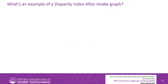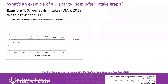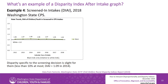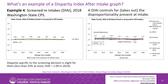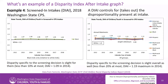Example 4: screened-in intakes, DI-AI, 2018 Washington state CPS — black kids only, relative to white kids. Disparity specific to the screening decision is slight for them, less than 10% at most; DI-AI equals 1.09 in 2014. A DI-AI controls for — that is, takes out — the disproportionality present at intake. Disparity specific to the screening decision is slight overall as well, less than 20% at most; DI-AI equals 1.19 maximum in 2014.